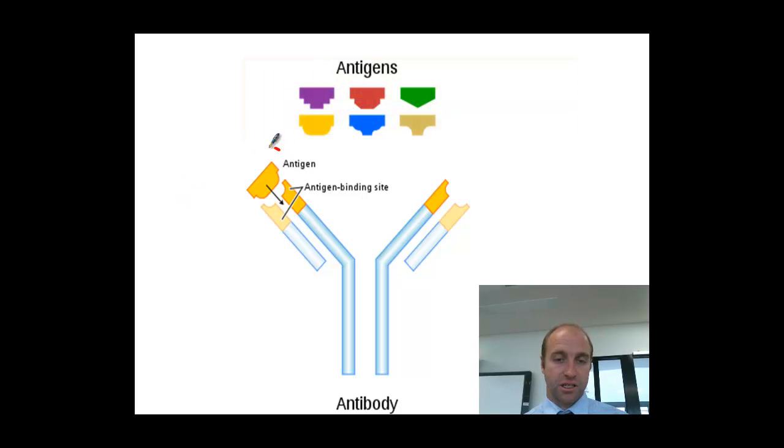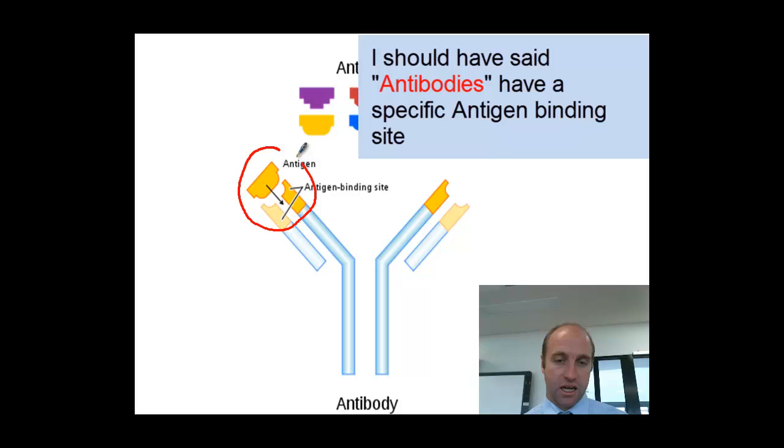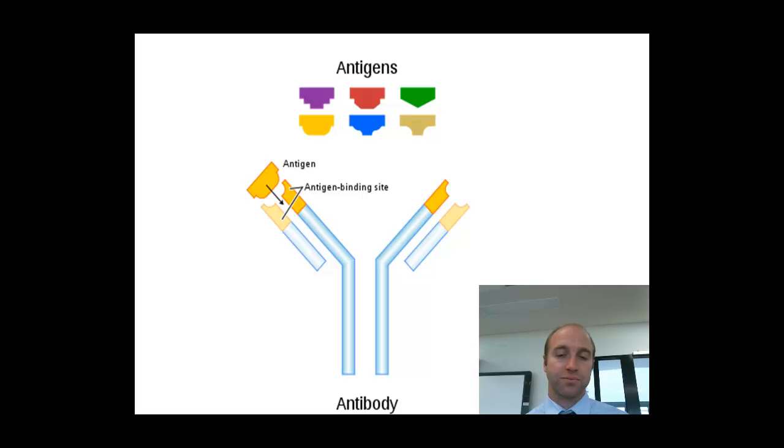As we know, the antigens have this region on the end here, the variable region, the antigen binding site, and it's that region that changes between every B cell. Every B cell is a little bit different.